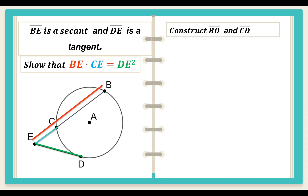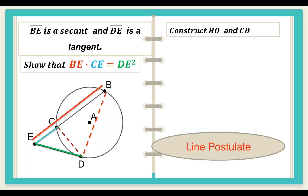Let us start by constructing BD, connecting point B and point D, and likewise constructing segment CD, connecting point C and point D. What allowed us to do this? The line postulate: there is exactly one line that can be drawn given two points. Having constructed segment BD and segment CD, new angles and triangles are formed.